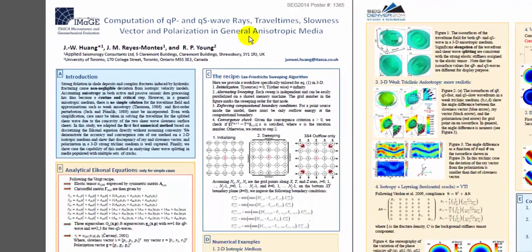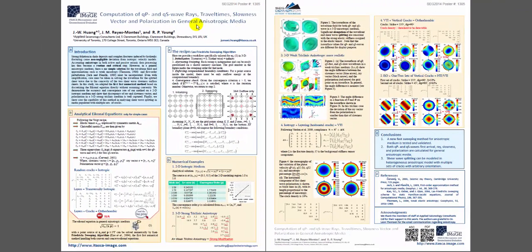This is our first attempt at anisotropy, so for now we are only interested in the kinematic information that includes the travel time, rays, slowness, and polarization. The shear wave splitting is also modeled by calculating the first arrival of fast shear wave and the slow shear wave. Hopefully in our second step we are going to include some dynamic information such as the amplitude, but for now this poster is about the kinematic information calculation in the general anisotropic media.